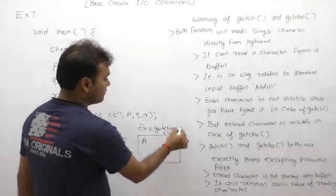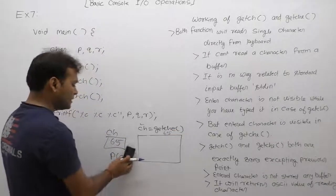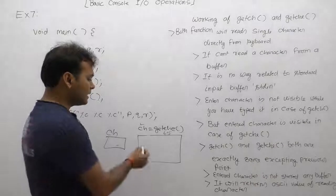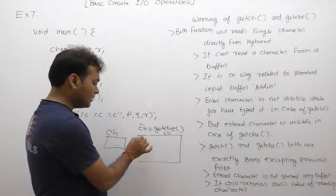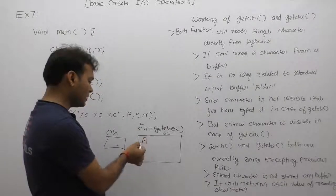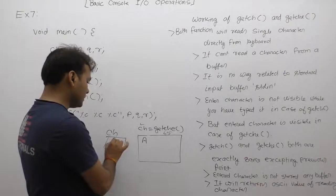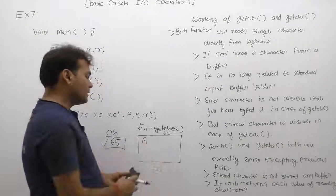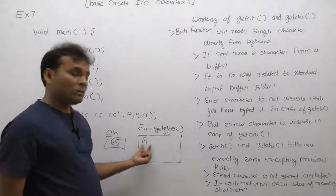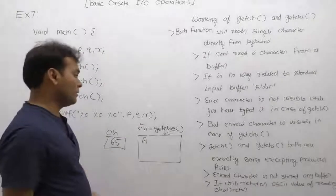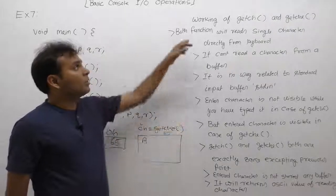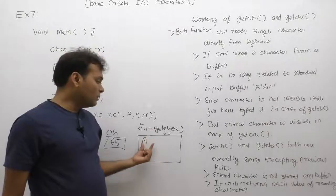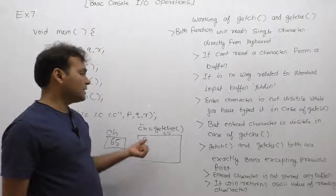The working of getche is almost the same as getch, accepting one single difference: getche reads a single character directly, but in this case at the time of entering the character, it IS visible on the monitor window. So when you press a key, the character is echoed to the screen. That is the key difference — with getch the character is not visible, but with getche the entered character is visible on the monitor.